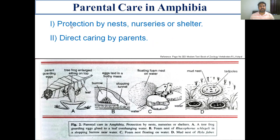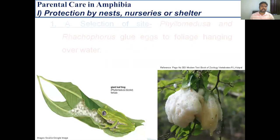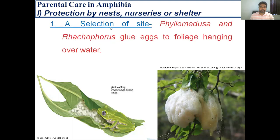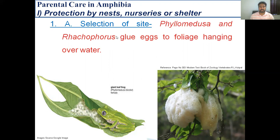The first category is protection by nest, nurseries, or shelter. In this category, the first way is the selection of site. Many amphibians do not lay eggs in water; they lay eggs on moist land or on the leaves or branches of trees present near a water body. For example, in the case of Phyllomedusa and Agalychnis, they glue the eggs to leaves hanging over the water body, and the tadpoles drop directly into the water.